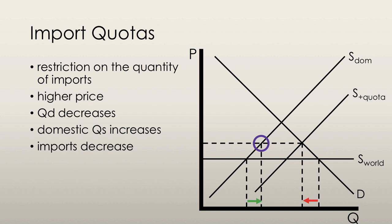The domestic quantity supplied has increased because the price has increased. The quantity of imports will also shrink; the new quantity of imports will be the amount of the quota imposed by the government.